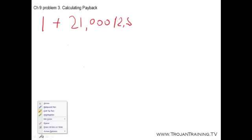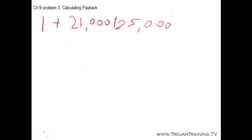The initial investment is 40,000. So the payback period for Project A is 1 plus whatever we're missing, 21,000 divided by 25,000. That gives us 1.84 years. That's the payback period for Project A.